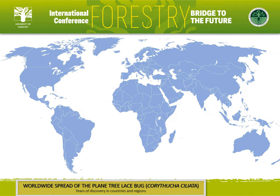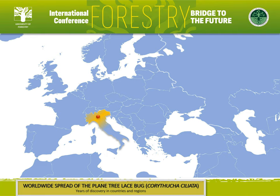Corythucha ciliata, the plane tree lace bug, is a nearctic species originating from North America. It was first recorded in Europe in Italy in 1964, and within about 30 years it reached and established in most countries in Europe. Later discoveries in some countries are very likely because of overlooking, such as the case in North Macedonia.